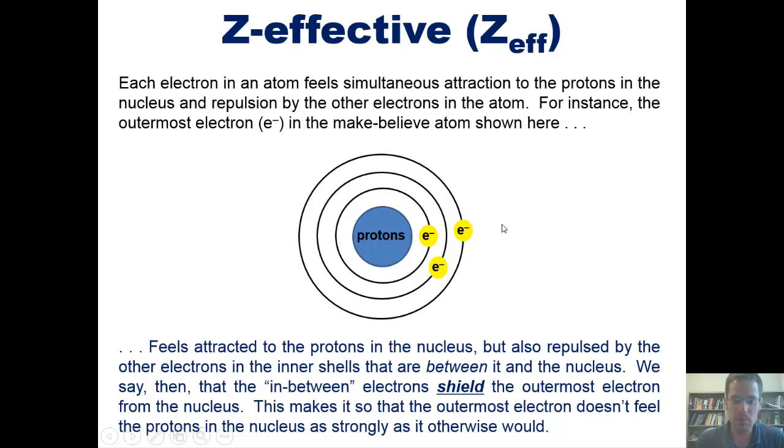So we can say then that these in-between electrons shield the outermost electron from the protons in the nucleus. This makes it so the outermost electron doesn't feel the protons in the nucleus and their contingent attraction as strongly as it otherwise would if it didn't have these electrons in between it and those protons.